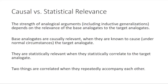Two types of relevance are causal and statistical relevance. It's pretty simple: the base analogates are causally relevant when they are known to cause, under normal circumstances, the target analogy. But they're statistically relevant — or merely statistically relevant — when they statistically correlate to the target analogy. Two things are correlated when they repeatedly accompany each other.